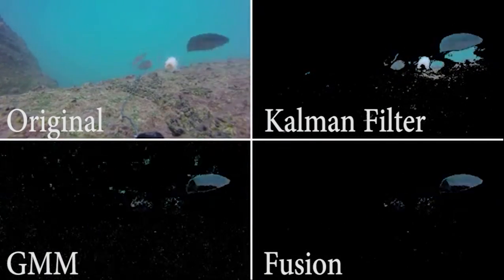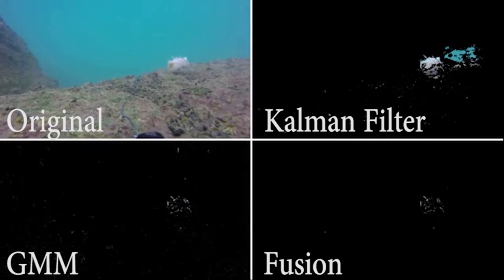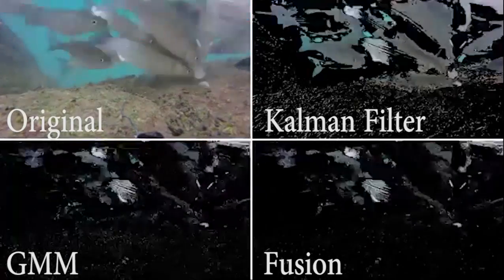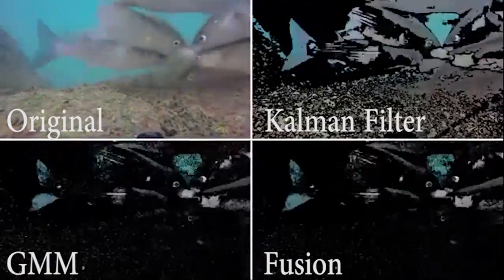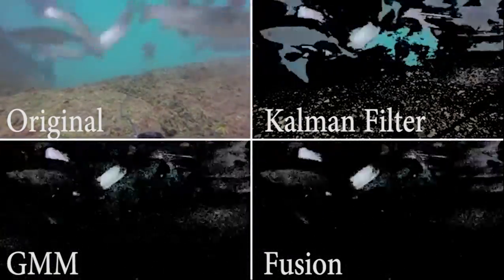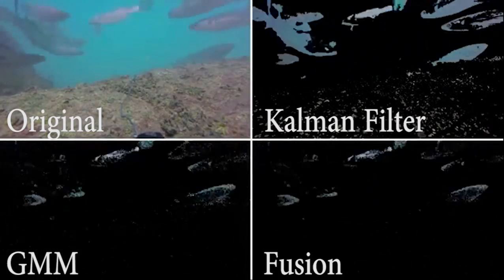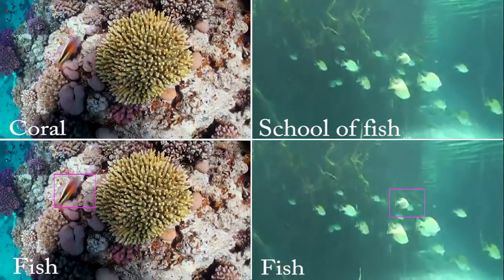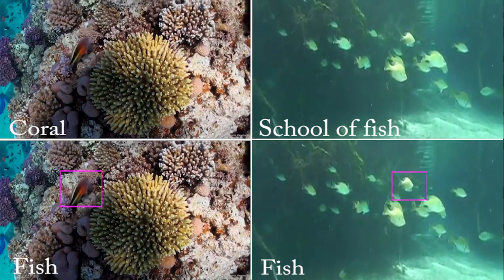The fusion of the two algorithms, in which we only include pieces of the foreground that are classified as such by both algorithms, addresses both of these issues and, as you can see, produces the best overall representation of the foreground. So why do we need foreground extraction?